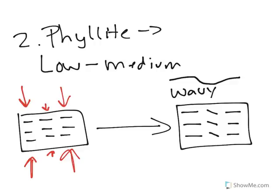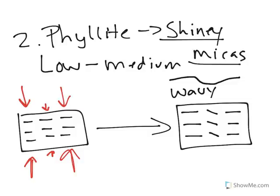Now, another good way to recognize phyllite is it's shiny. So it's shiny because we're starting to develop micas. So that's important.